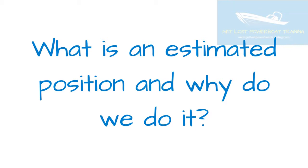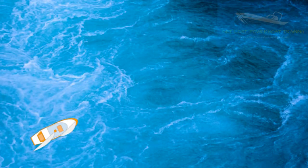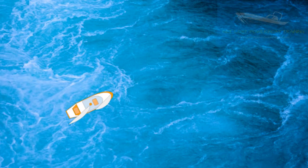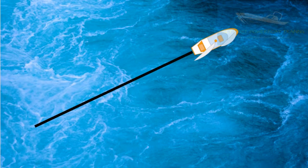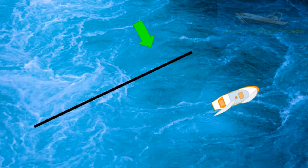What is an estimated position and why do we do it? An estimated position is a position fix on a chart that also takes into account the potential effects of wind and tide to give a rough position of where we think we may have ended up having followed a known course. In effect, we go on a predetermined heading and we take a look at the effect of the wind and tide and where they may have pushed the vessel off of our intended course.